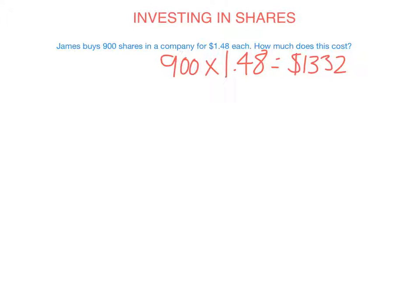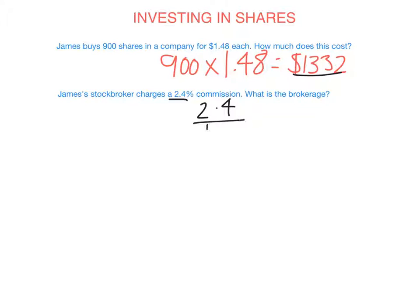But you can't just buy shares directly — it needs to be done by a stockbroker, and the stockbroker charges a commission called brokerage. Calculating the brokerage isn't hard; it's just a simple percentage of the total. We need to find 2.4% of $1,332, so we calculate 2.4 ÷ 100 × 1,332, which equals $31.97. So James would have to pay the stockbroker $31.97 to buy those shares.